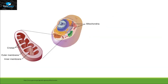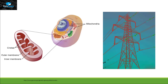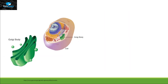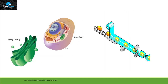Mitochondria is acting as a powerhouse of that factory, providing energy to each department in order to perform their function. Golgi bodies, on the other hand, are acting like a packaging department of that factory, producing finished products in order to leave the cell.